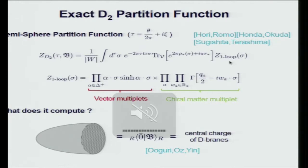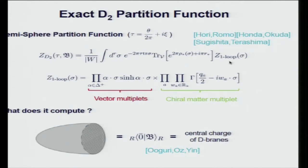With the supersymmetric theory on the hemisphere and appropriate boundary data, we use the localization technique to compute the exact hemisphere partition function. Here W is the Weyl group of the gauge group, tau is the complexified FI parameter, and we have a contribution from the boundary degrees of freedom—the Chan-Paton vector space—and a one-loop determinant. Similar to the two-sphere story, this hemisphere partition function computes the overlap between the canonical ground state and the boundary state, which gives the central charge of the D-brane in Calabi-Yau space, exact in alpha-prime corrections including worldsheet instanton corrections.